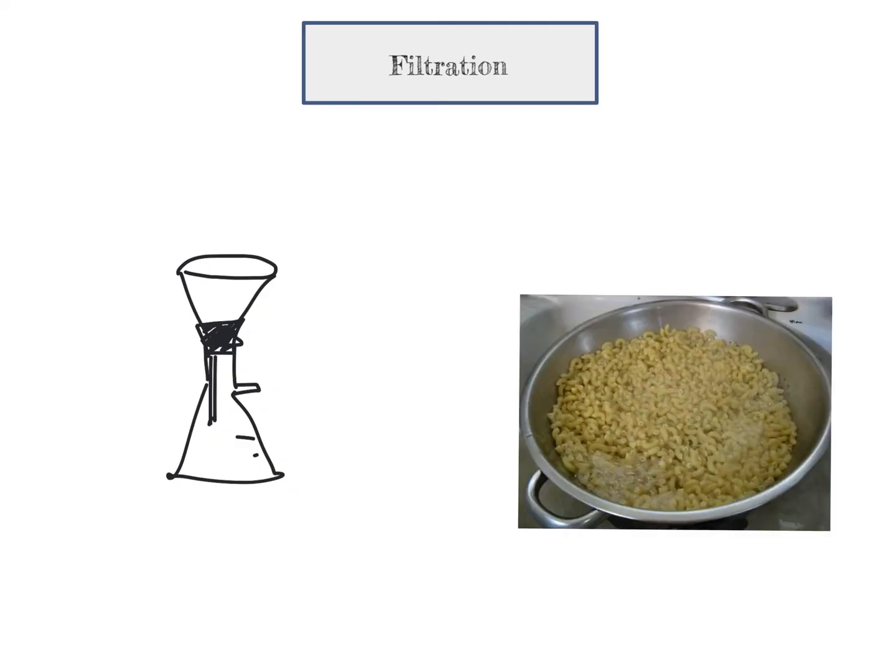Have you ever made mac and cheese at home or any kind of pasta where you boil the pasta and you've got this solid material floating around in super hot water, and all you really want is that solid pasta when you're done cooking it? What you do is pour your pasta into a strainer or colander, and it traps your pasta in this bowl with holes while all the water falls down to the bottom.